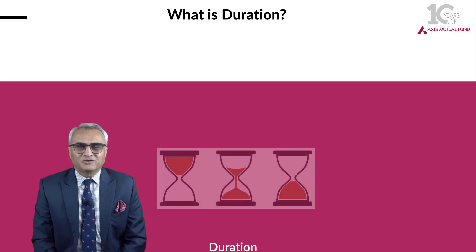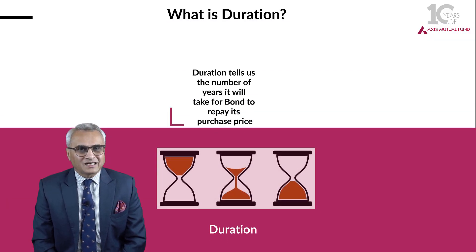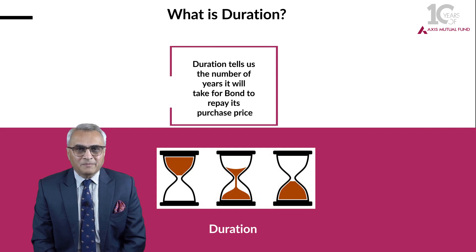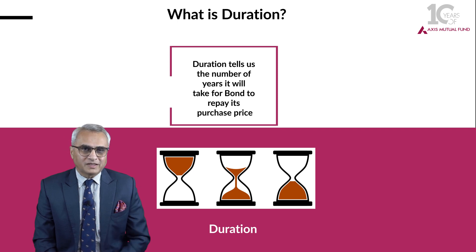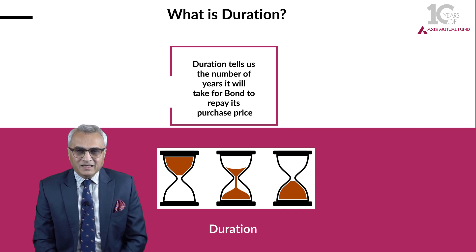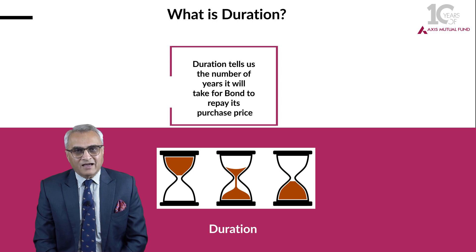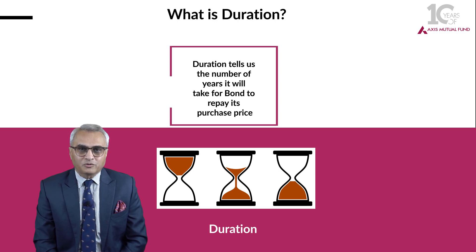Then what is duration? Duration tells us the number of years the bond will repay its purchase price. Let me explain with an example. Let us assume there is a 10% coupon attached to a 5-year debt instrument, which means the investor will receive 10 rupees every year for the next 5 years, which is equal to 50 rupees on this particular bond.